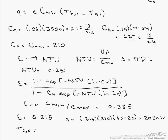Finally, we find our T_C,out, which is T_C,in, which equals 20 degrees, plus our Q divided by our C_C, which is 210 joules per second K. And our T_C,out is 29.7 degrees C.